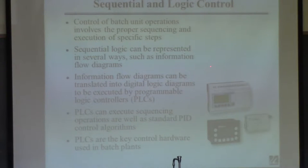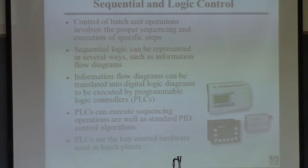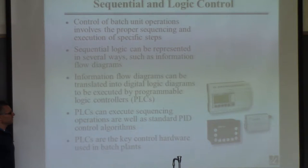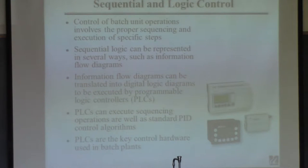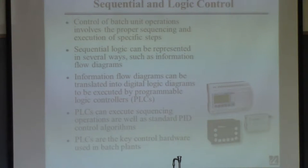Normally these PLCs communicate with much bigger computer control systems. To control batch processes, you have to sequence steps and execute them in a specific order. You can represent this in a logic flow diagram and implement it in programmable logic controllers. These are very simple devices compared to typical process control computers. They do basically two things: sequential operations and simple things like PID control. You could use one to start up a reactor and then control temperature in the reactor, but it wouldn't be as sophisticated as distributed control systems.